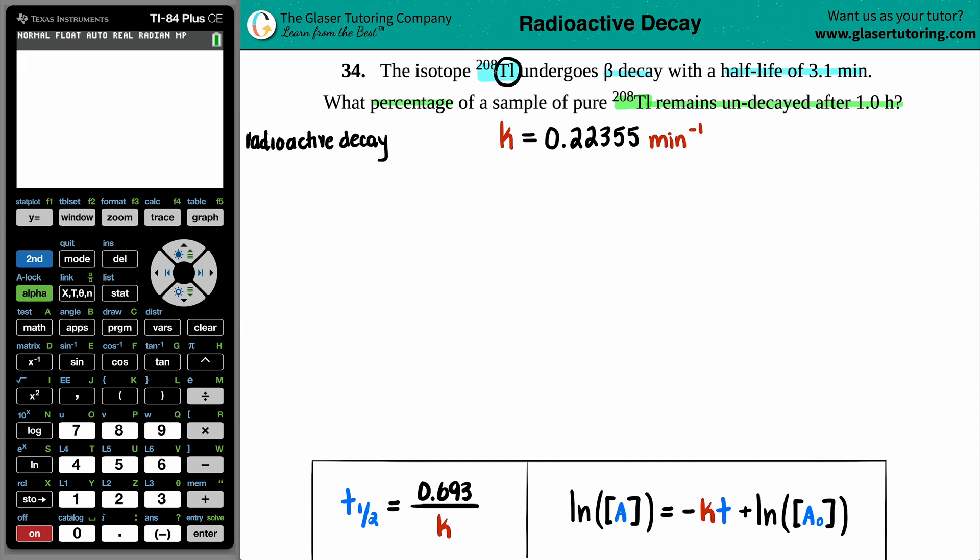If they want to give me thallium, sure. They want to give me uranium, sure. They want to give me carbon, sure. Any type of radioactive decay always abides by first-order kinetics. There's no exception. First-order kinetics.